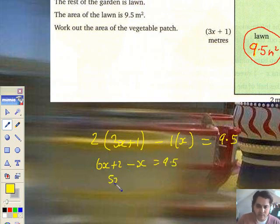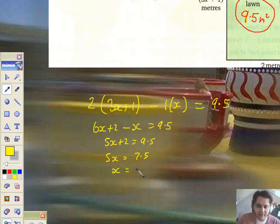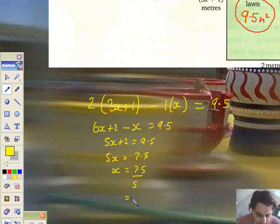Tidying it up. 5x plus 2 equals 9.5. Subtracting the 2. 5x equals 7.5. Dividing by 5. 7.5 over 5. And let's see what x is. In fact, I'll see it's 1.5, but let's just check it. 7.5 divided by 5. Yeah, 1.5. So x is 1.5 meters.